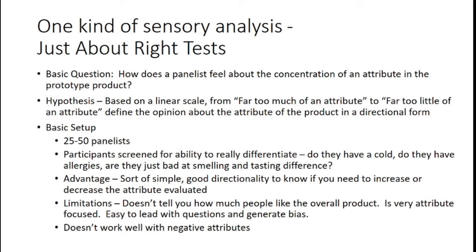I often recommend using five points because most naive panelists — and by naive I mean untrained, not inexperienced — really struggle with more than five points. Do people know the nuance between 'moderately' versus 'slightly' versus 'extremely'? I would argue they don't. They know they like it extremely, like it slightly, or they're neutral. That five-point scale is quite straightforward.